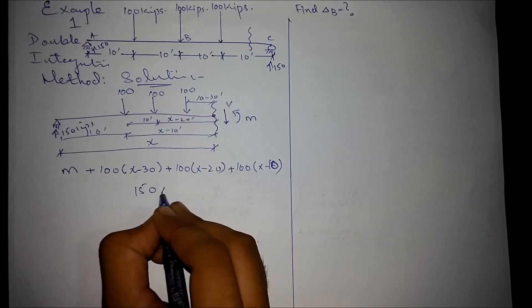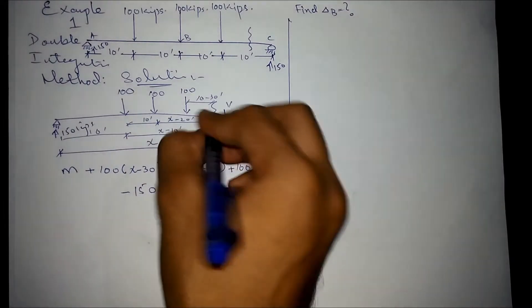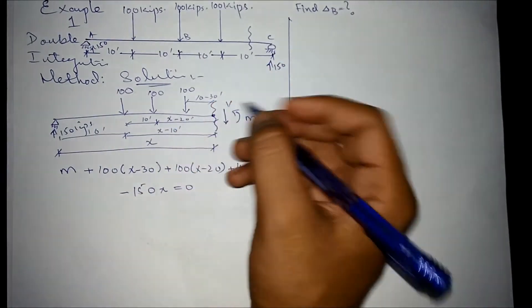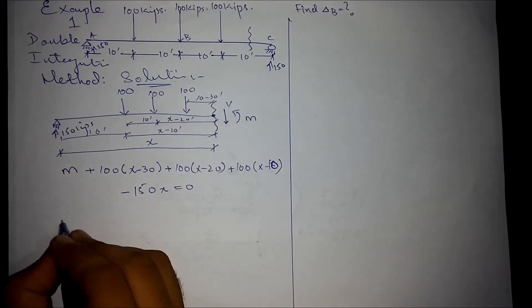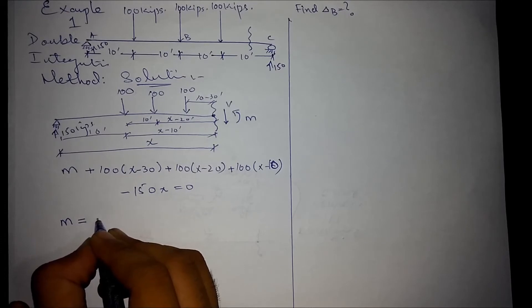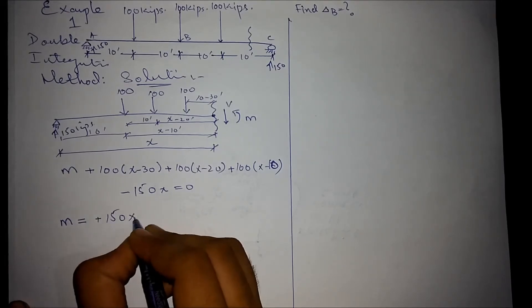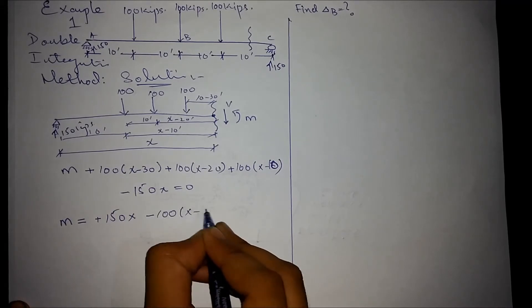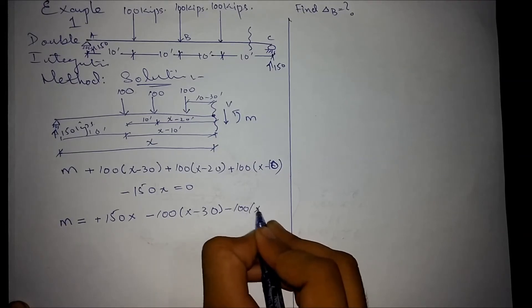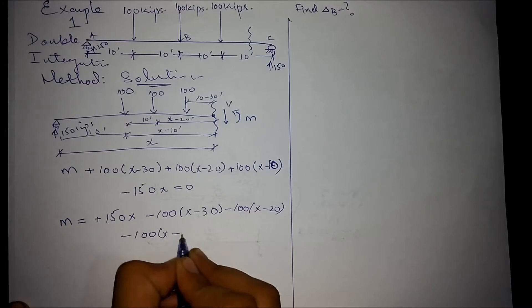And this 150 kips force is having a lever arm of x, 150 into x. The sign is negative, as it is tending to rotate this point, or the beam in clockwise direction. So the generalized moment equation would be, plus 150x minus 100(x minus 30) minus 100(x minus 10).